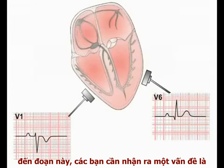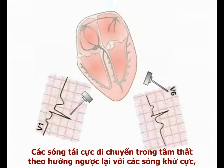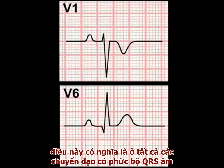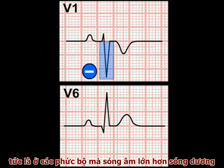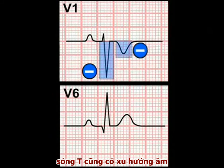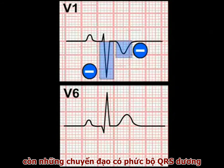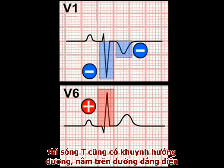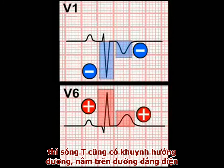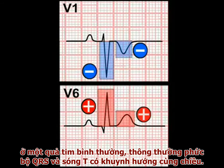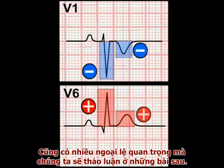The fact that repolarising current moves through the ventricles in the opposite direction to the depolarisation wave means that in leads with an overall negative QRS complex — where the negative deflection is larger than the positive deflection — the T-wave also tends to be negative, lying below the isoelectric line. While in leads with an overall positive QRS complex, the T-waves are also positive, lying above the isoelectric line. To use the jargon, in non-diseased hearts, the QRS complexes and T-waves tend to be concordant. There are important exceptions to this rule, which we will deal with shortly.